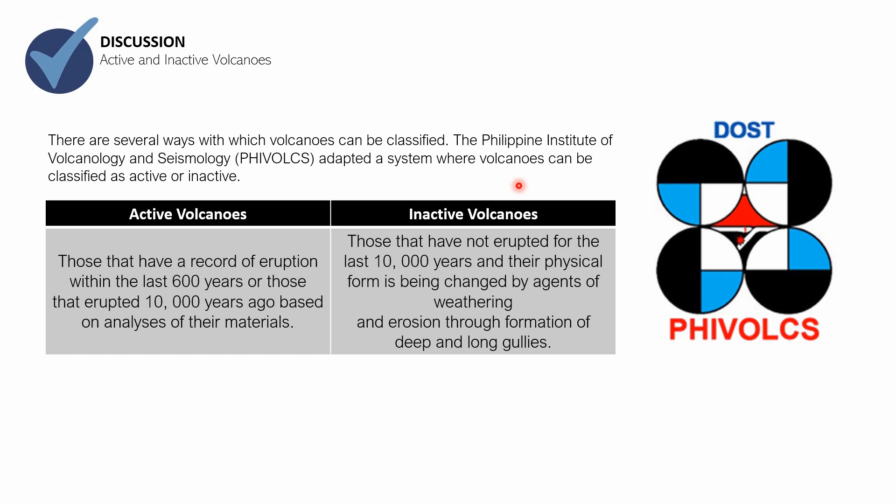The next classification is an inactive volcano. An inactive volcano is one that has not erupted for the last 10,000 years based on extruded materials, and whose physical form is being changed by agents of weathering and erosion through formation of deep and long gullies. There is no proof of explosion — even in the extruded materials and rocks around them, there is no proof of eruption in the last 10,000 years — so we call these inactive volcanoes.